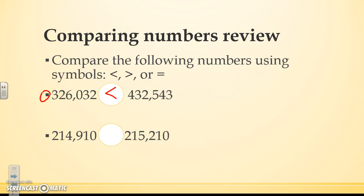Let's try the other problem. Again we're going to write both numbers lining up our place values. So I have 214,910 and 215,210. I'm going to start from the left and go right.